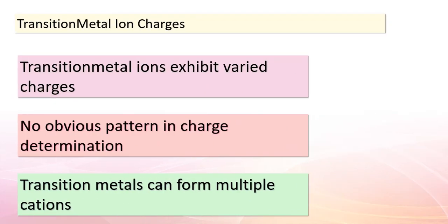Now, let's uncover the mysteries of transition metal ions. Unlike alkali and alkaline earth metals, transition metals don't follow a straightforward charge pattern — their ion charges can vary widely. One remarkable characteristic of transition metals is their ability to form more than one type of cation. For instance, compounds with Fe²⁺ and Fe³⁺ ions are quite prevalent. This flexibility in charge makes transition metals a dynamic and intriguing group.